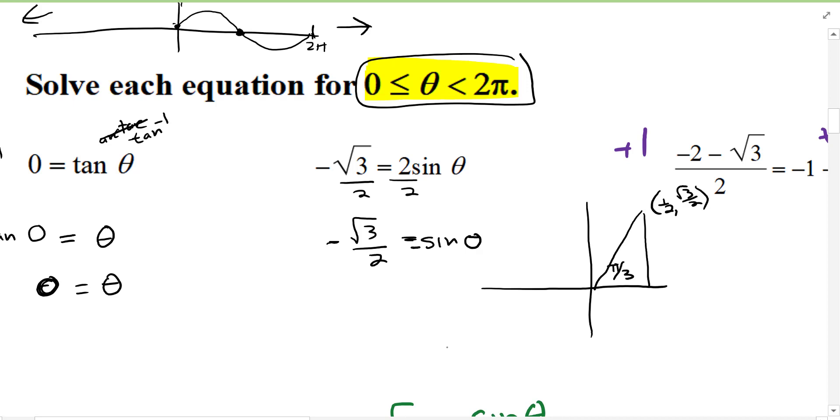Well sine is negative in the lower two coordinates. So we're going to have a situation where if this is pi thirds right here, one, two, three, this would be four pi thirds, this would be five pi thirds. Remember three pi thirds cancels to pi.